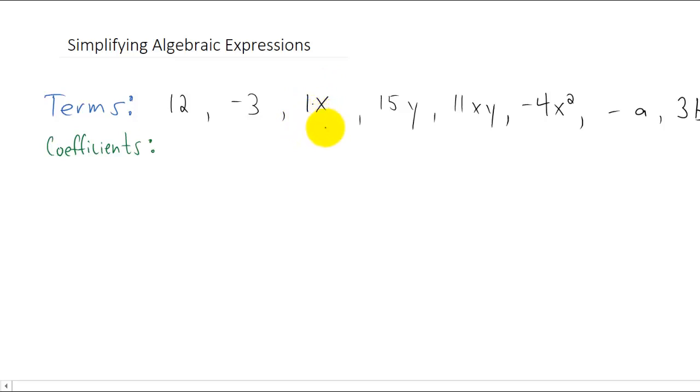Remember that one times anything is just itself. We typically don't like to write that one in there because it's just a waste of time, but if you don't see a number on a term, its coefficient is just one. Likewise, the coefficient of negative a is negative one, because we can think of this as just negative one times a.